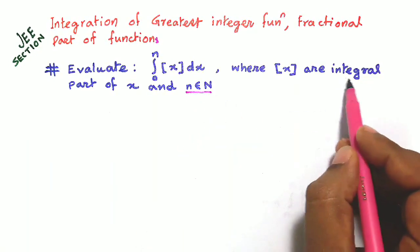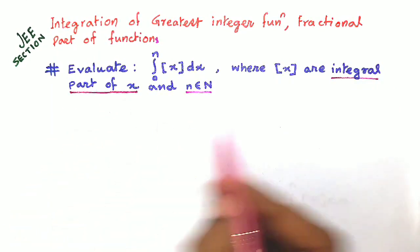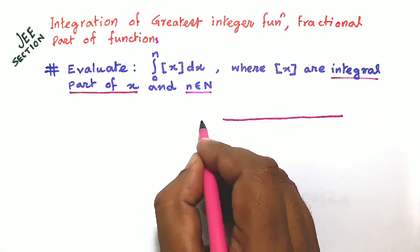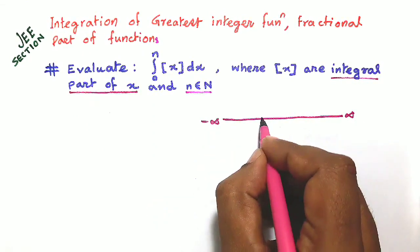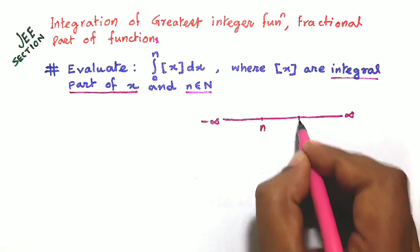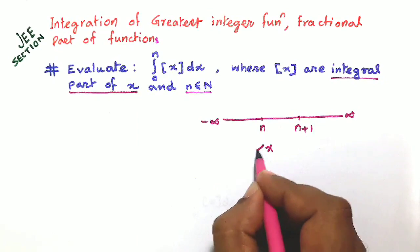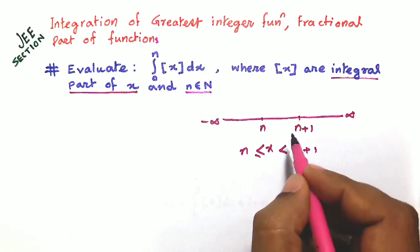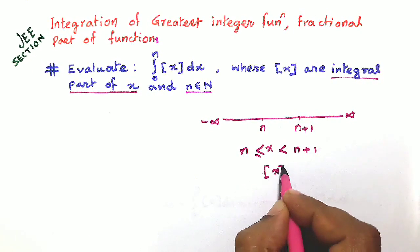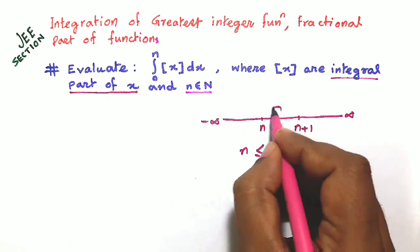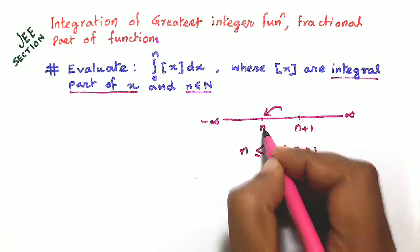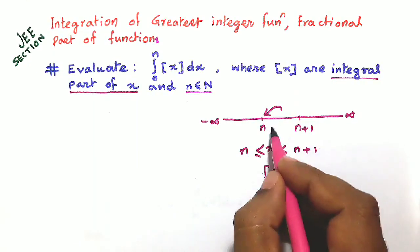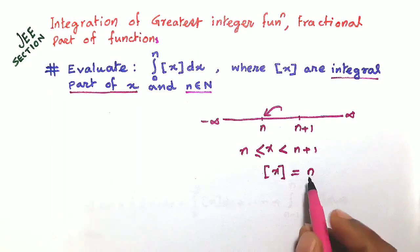Let's start with the concept of integral part of x. Suppose we consider on the real line, from negative infinity to positive infinity, two consecutive points n and n plus 1, and x lies between n and n plus 1. If we take the integral part of x, we take the nearest integer, which is n. So the integral part of x when x lies between n and n plus 1 is n.